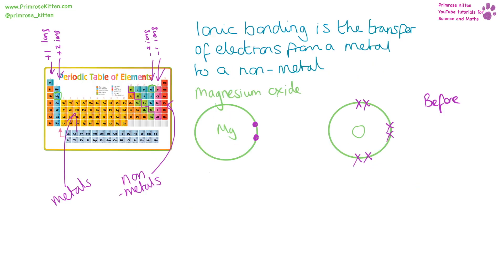Ionic bonding is the transfer of electrons from a metal — on the left side of the periodic table — to a non-metal on the right side. Anything in group one forms a +1 ion, group two a +2 ion, group six a −2 ion, and group seven a −1 ion.